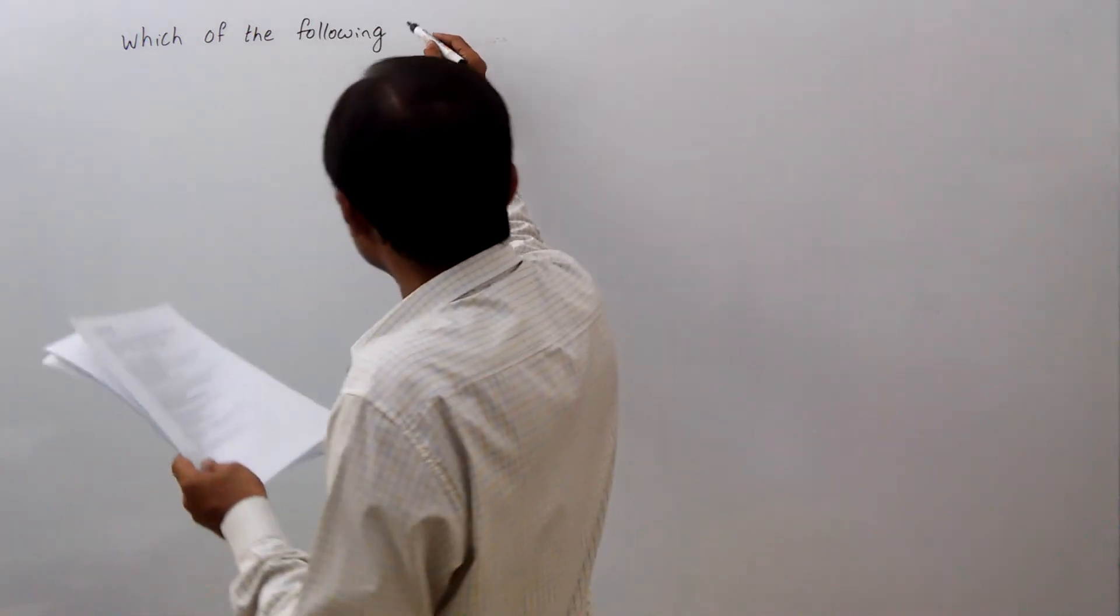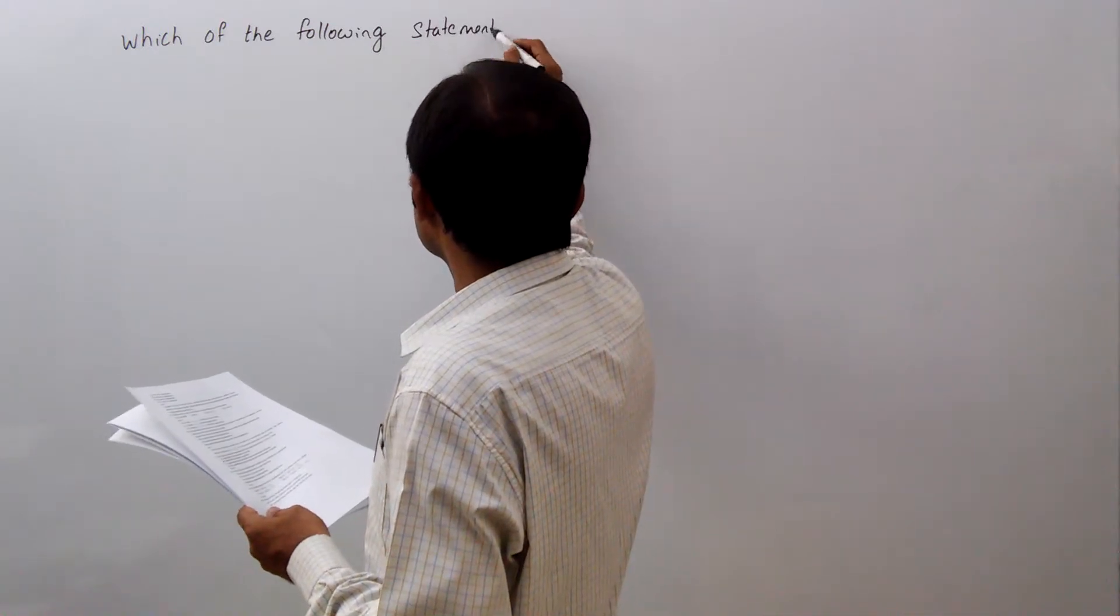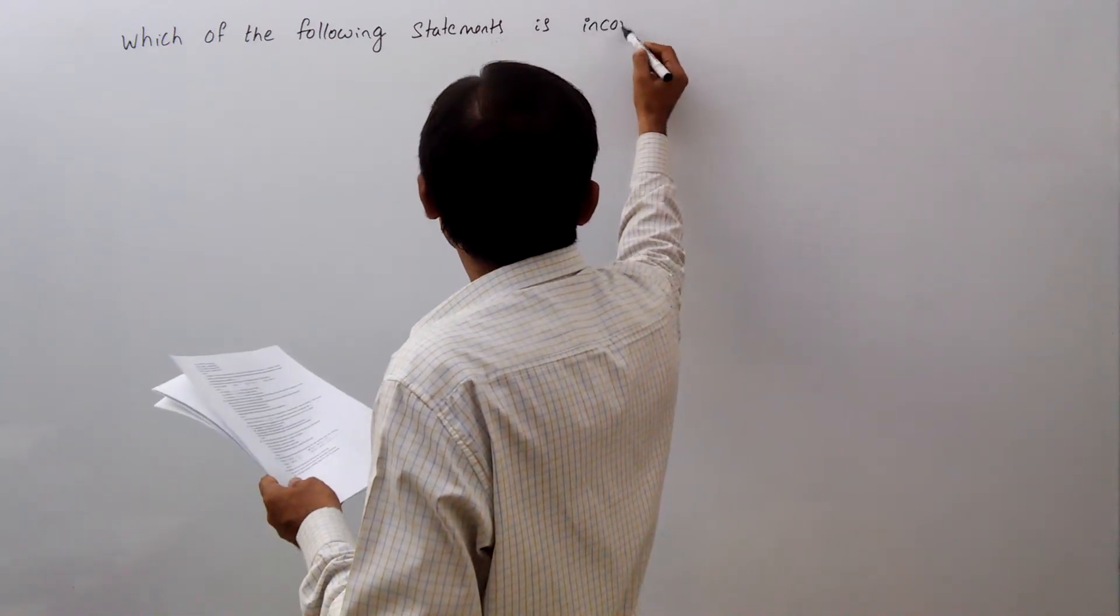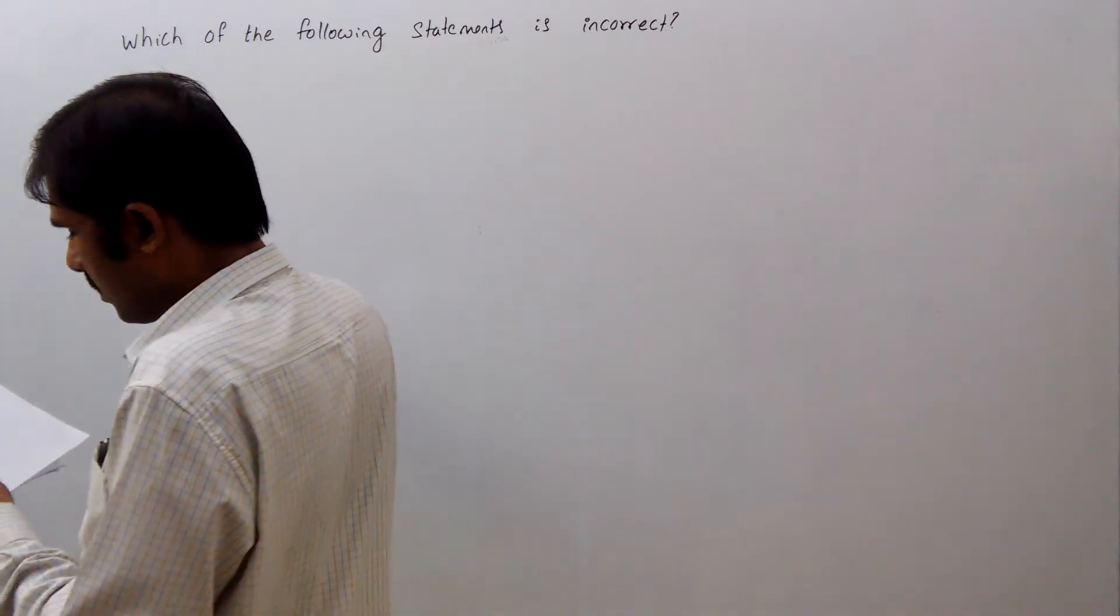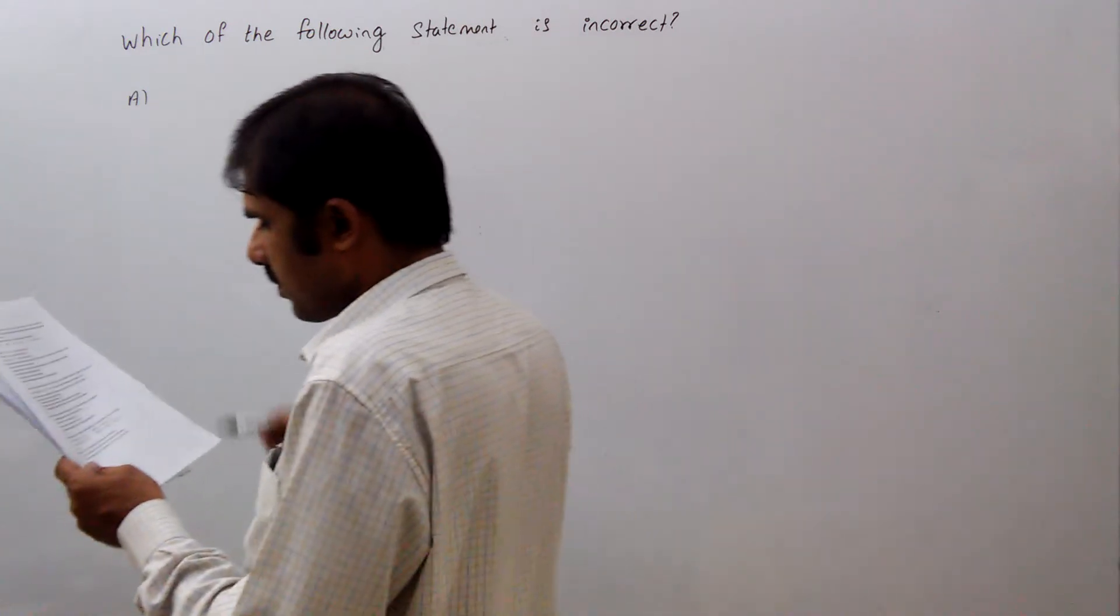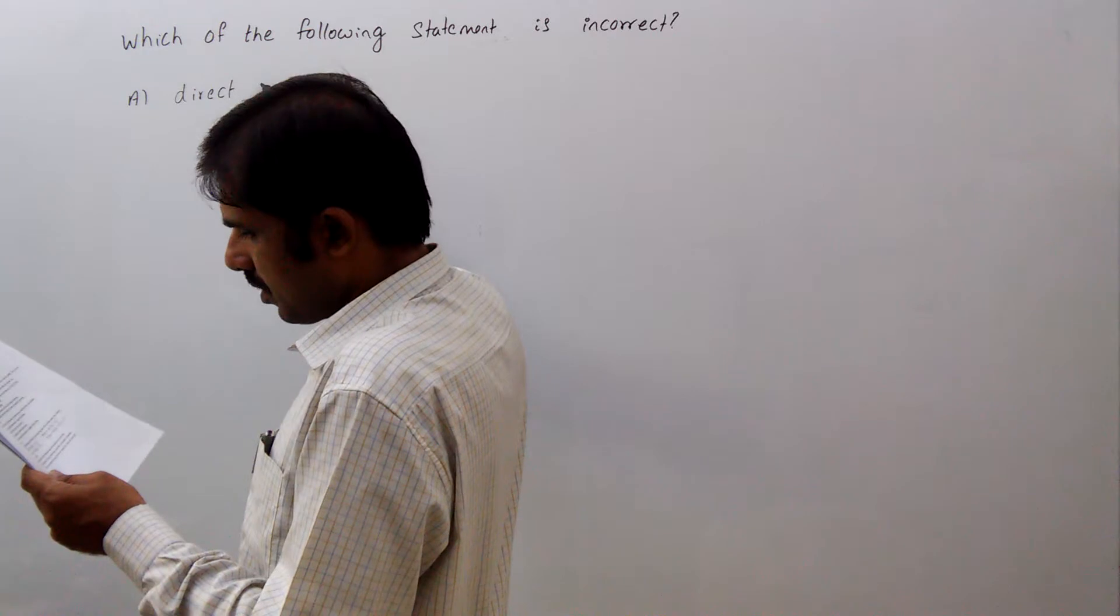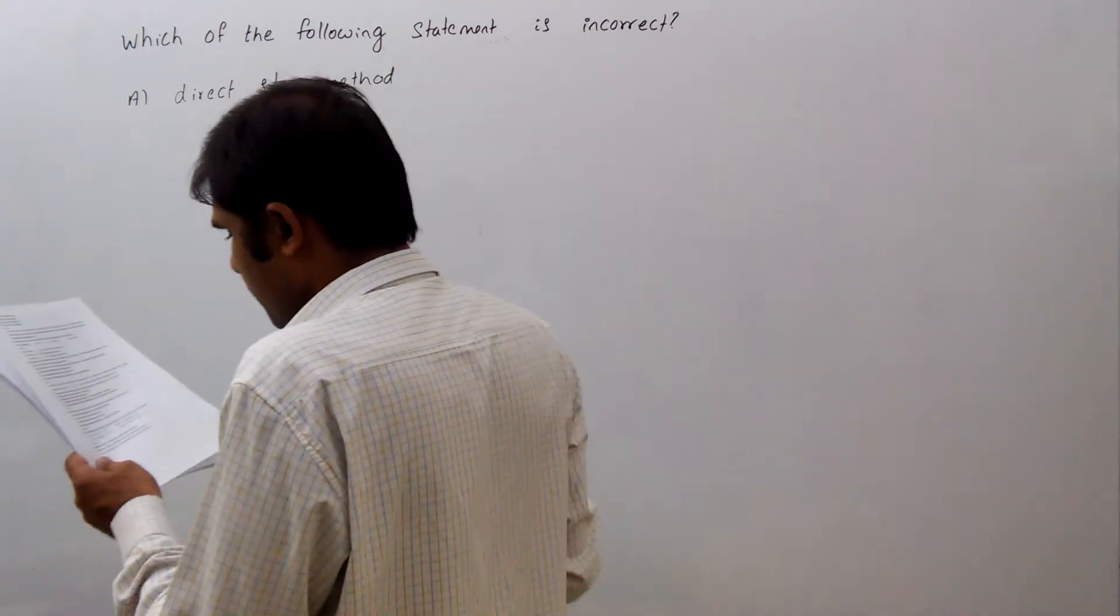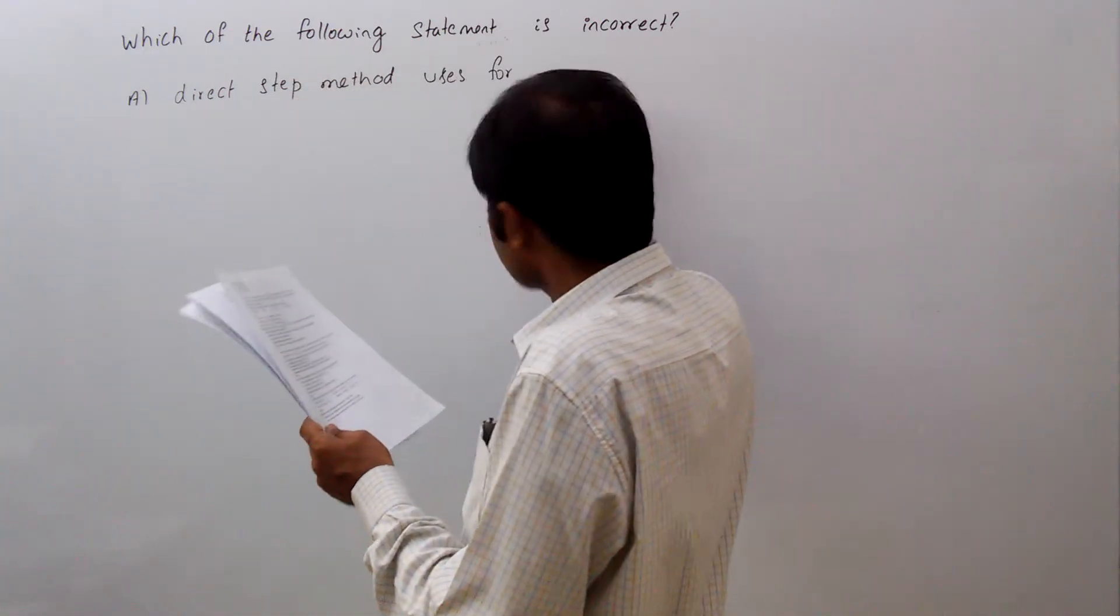Which of the following statement is incorrect? Option A: Direct step method uses for prismatic channels.